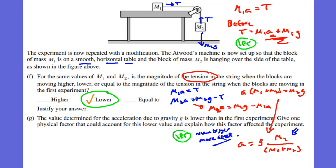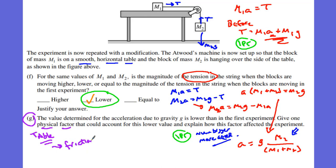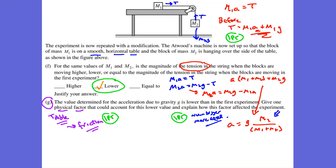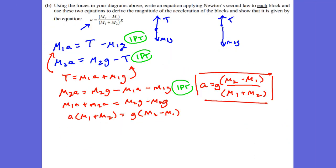Part G: the value determined for the acceleration of gravity is lower than in the first experiment. The horizontal table was not present in the first experiment, and so friction on the table must be involved in the second experiment — that's the physical factor reducing the measured value. One point for G.